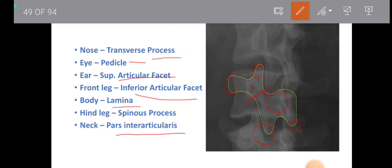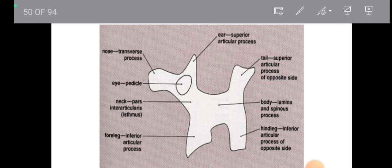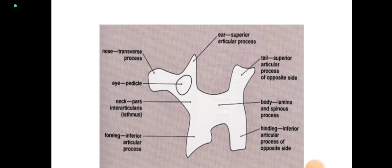Here is the normal anatomy of the scotty dog — we have to remember it. The eye is the pedicle, the nose is the transverse process, the ear is the superior articular process, the front leg is the inferior articular process, the neck is the pars interarticularis, the body is the lamina and spinous process, the hind leg is the inferior articular process, and the tail is the superior articular process of the opposite side.